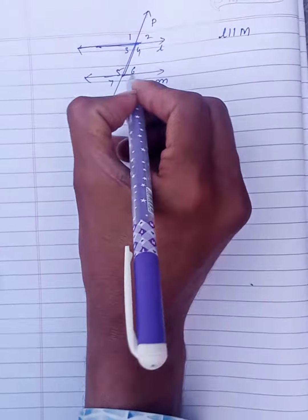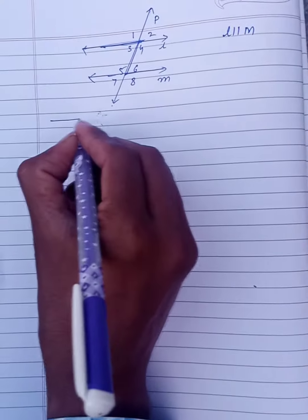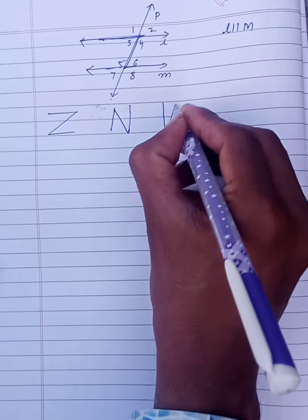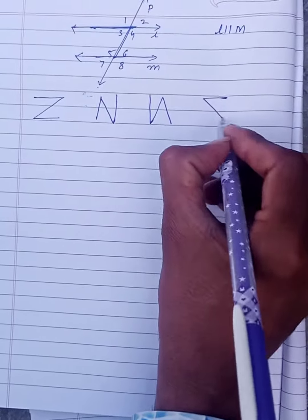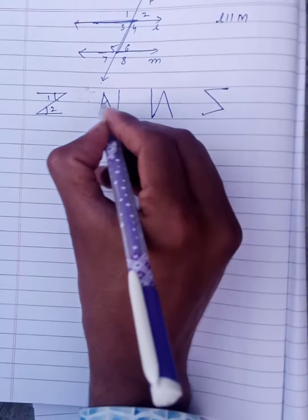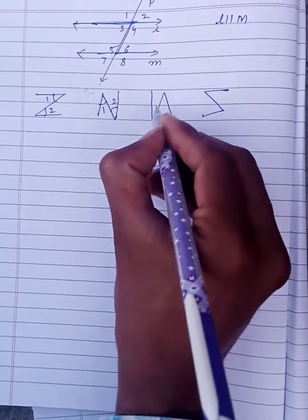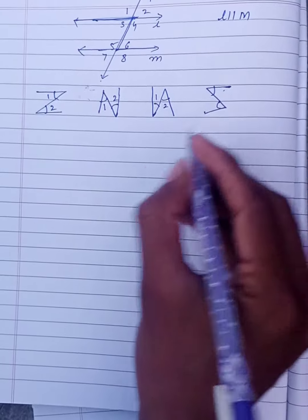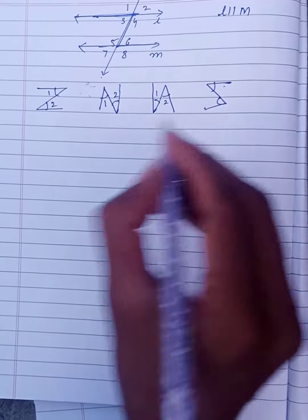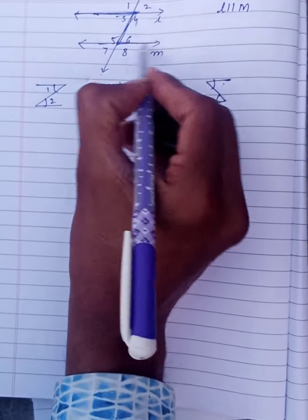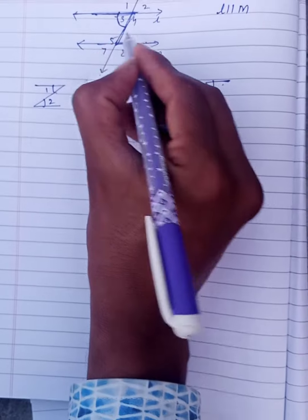In the alternate opposite angles, wherever the Z forms — this side, or like this side — wherever the Z shape appears, those angles are equal. These are called the alternate opposite angles, otherwise alternate interior angles. In this diagram, angle 3 is equal to angle 6.